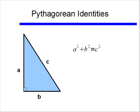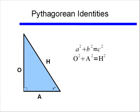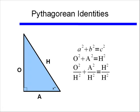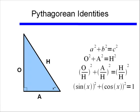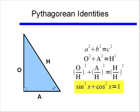Going back to the Pythagorean theorem — a squared plus b squared equals c squared — if we use opposite, adjacent, and hypotenuse instead, we get: opposite squared plus adjacent squared equals hypotenuse squared. Dividing both sides by hypotenuse squared, we get opposite over hypotenuse all squared, plus adjacent over hypotenuse all squared, equals 1. Since opposite over hypotenuse is sine and adjacent over hypotenuse is cosine, this gives us sine squared X plus cosine squared X equals 1.